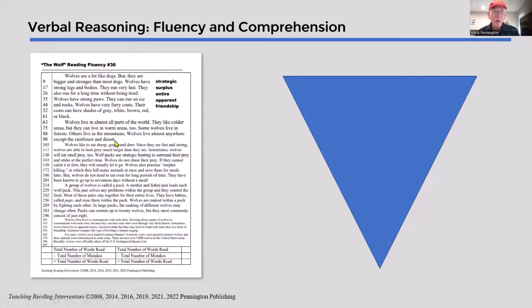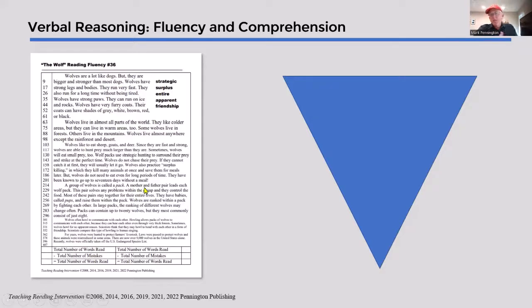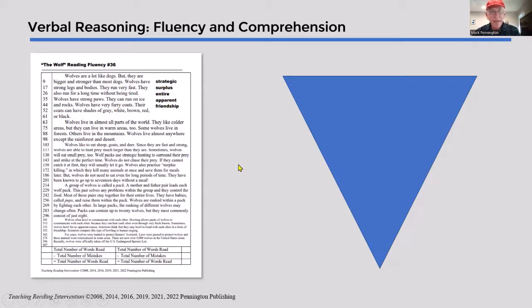Additionally, the articles themselves are arranged in an upside-down pyramid design. The first two paragraphs are at third grade reading level — notice the larger print. The next two paragraphs are at fifth grade reading level, and the last two are at seventh grade reading level, such that the reader begins fluency practice at an easier level to build confidence, then moves to more difficult academic language and sentence length.